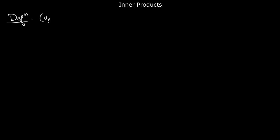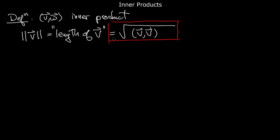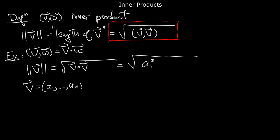Now suppose you have an arbitrary vector space with an inner product (v,w). The operation of taking (v,v) has special significance. We write ‖v‖ for the length, or norm, of v, defined to be the square root of the inner product of v with itself. It's critical that (v,v) is non-negative, so the square root makes sense. For the standard inner product, if v has coordinates a1 through an, then ‖v‖ = √(a1² + ... + an²), which is the usual notion of length in Rn.